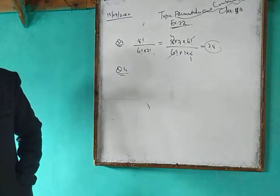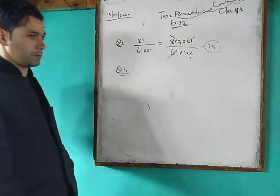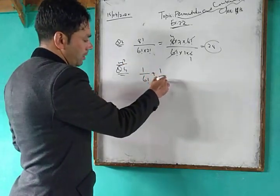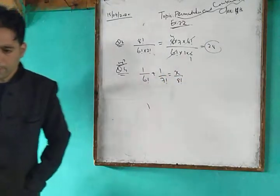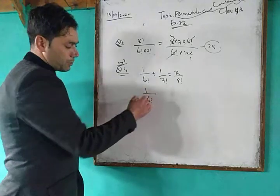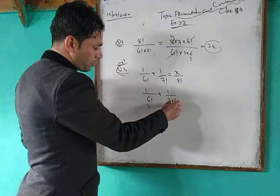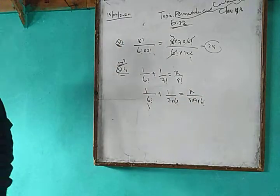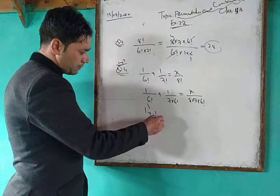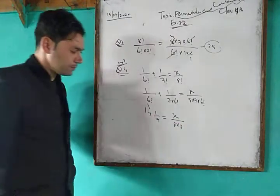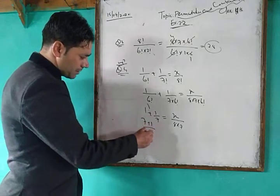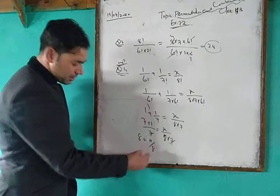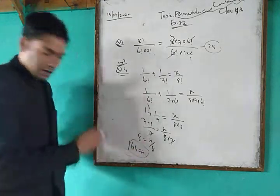Question number 4: Given 1/6! + 1/7! = x/8!, find x. We rewrite 7! as 7 × 6! and 8! as 8 × 7 × 6!. Dividing through by 1/6!, we get 1 + 1/7 = x/(8 × 7). This gives 8/7 = x/56, so x = 64.